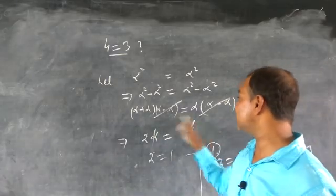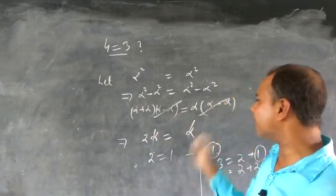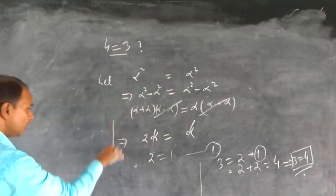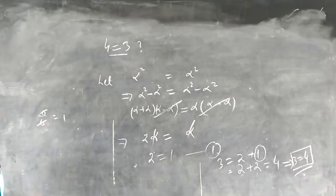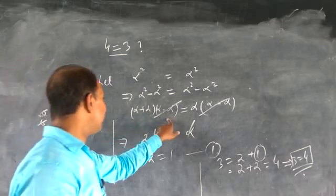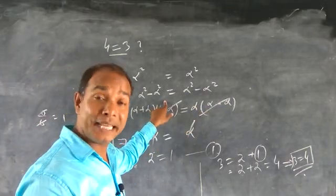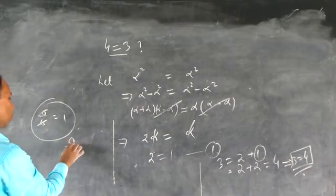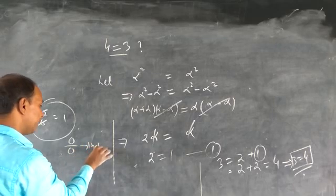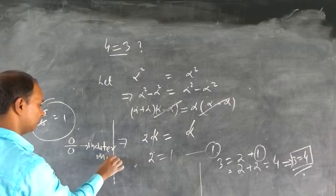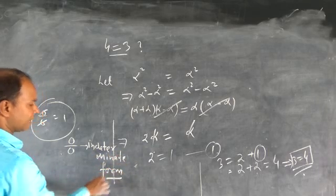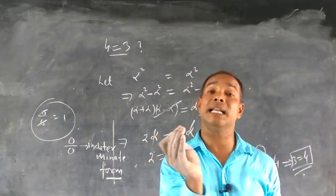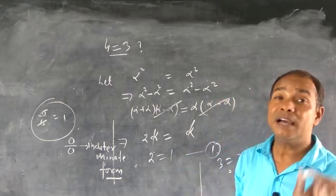We divided both sides by alpha minus alpha — but alpha minus alpha is zero! Canceling means you divided by alpha minus alpha on both sides. So how can you divide alpha minus alpha by the same alpha minus alpha? That means you are agreeing that zero divided by zero equals one. Zero divided by zero — this is called indeterminate form.